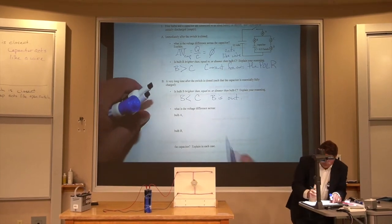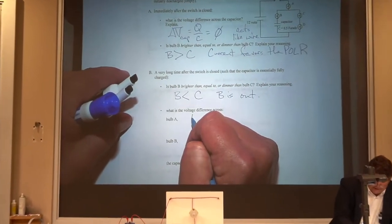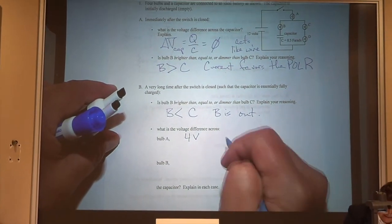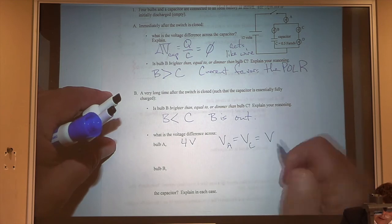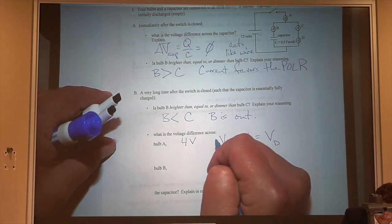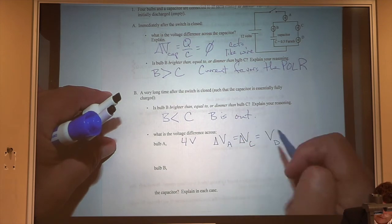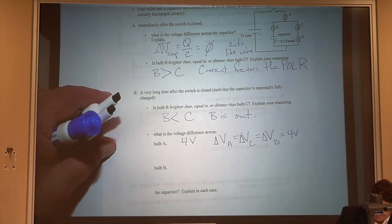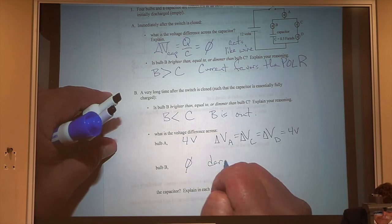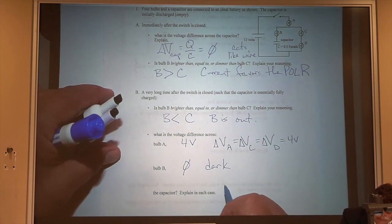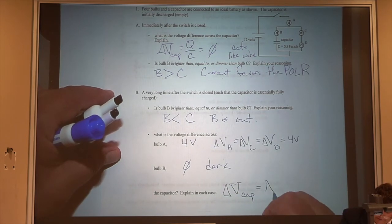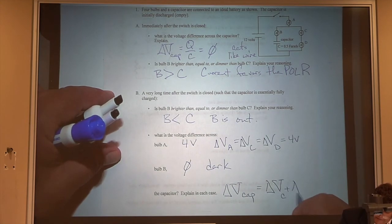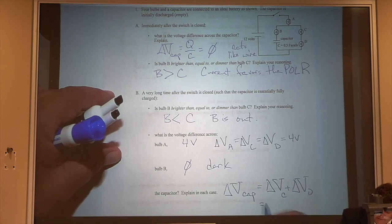Now what is the voltage difference across bulb A? Well, the voltage difference across bulb A, we said, was four volts. And that's the voltage of A is equal to the voltage of C is equal to the voltage across D. And when I say voltage, what I really mean is the change in voltage from one side to the other. And those are all equal to four volts. Bulb B is out, it's dark. And the capacitor, the voltage across the capacitor is equal to the voltage across C plus the voltage across D, which is eight volts.